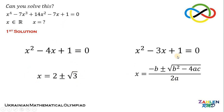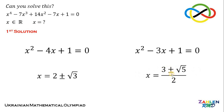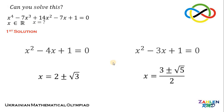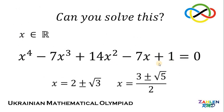Applying the quadratic formula to x squared minus 3x plus 1 equals 0, we get x equals 3 plus or minus square root of 5, all over 2. Therefore, we have four real values for x: x equals 2 plus or minus square root of 3, or x equals 3 plus or minus square root of 5 over 2.